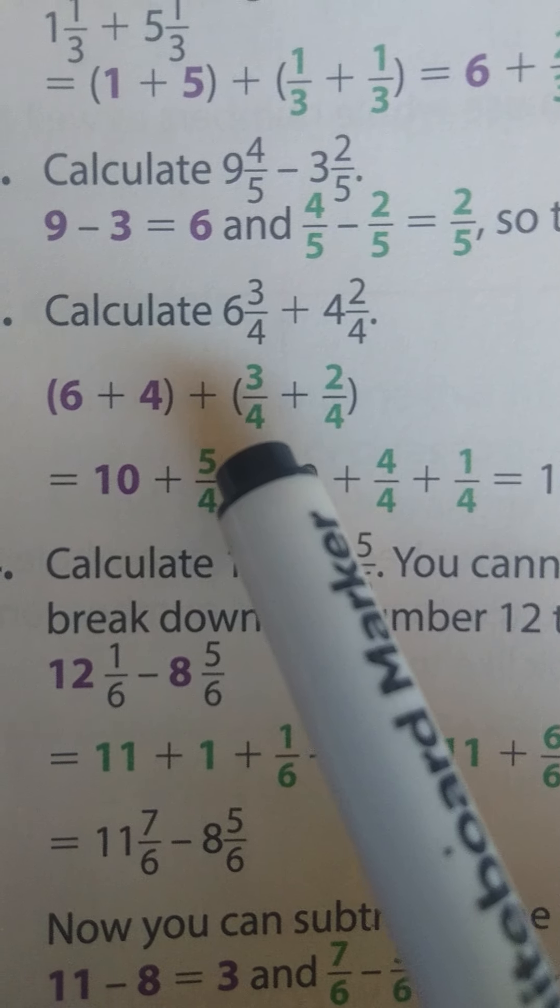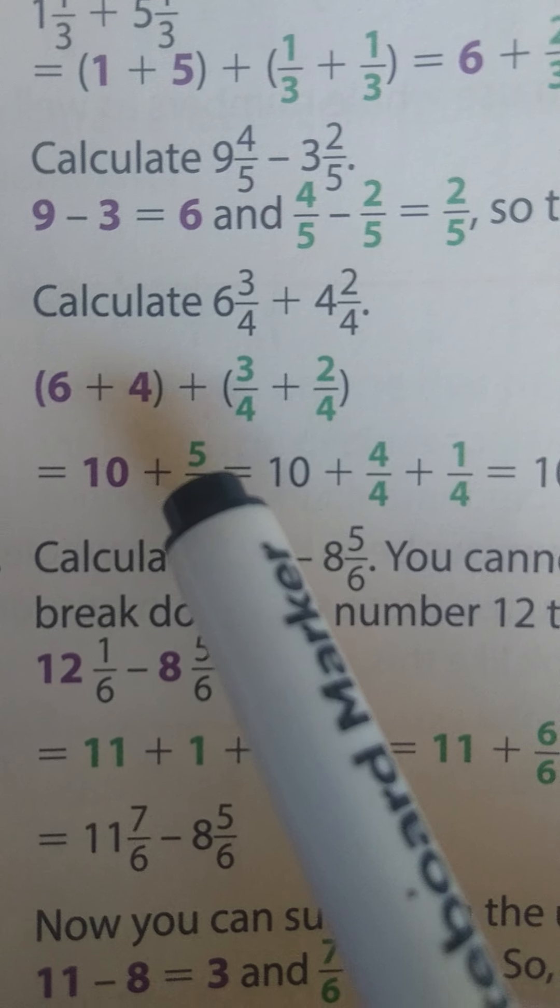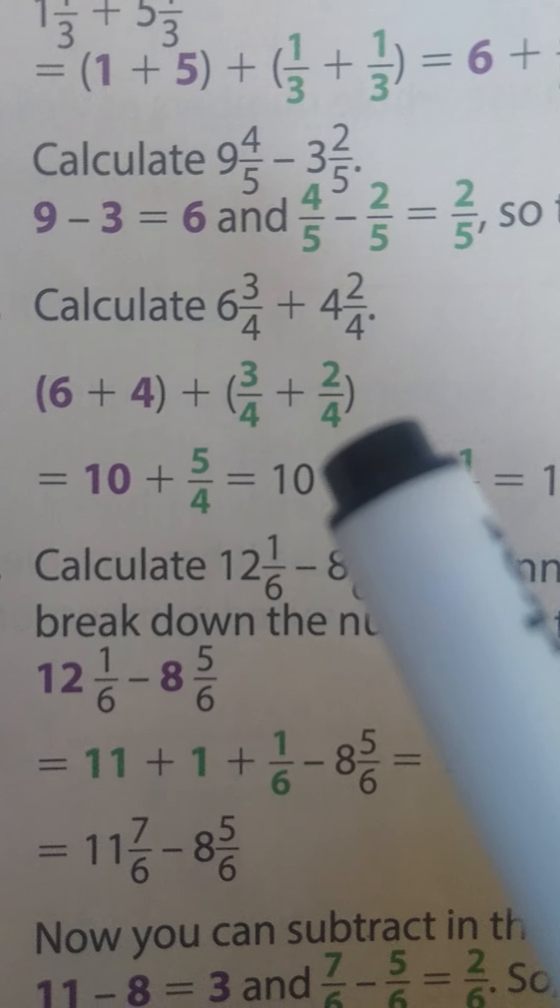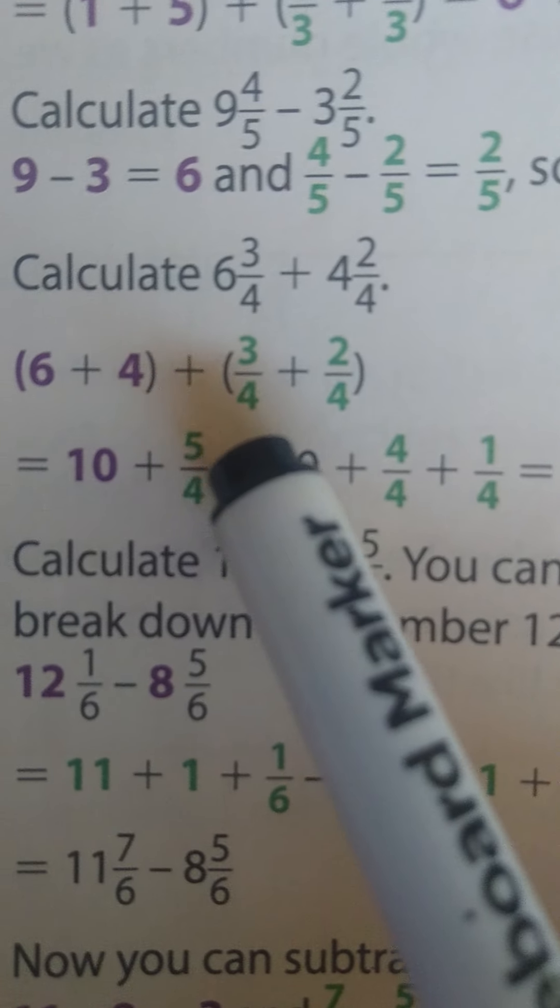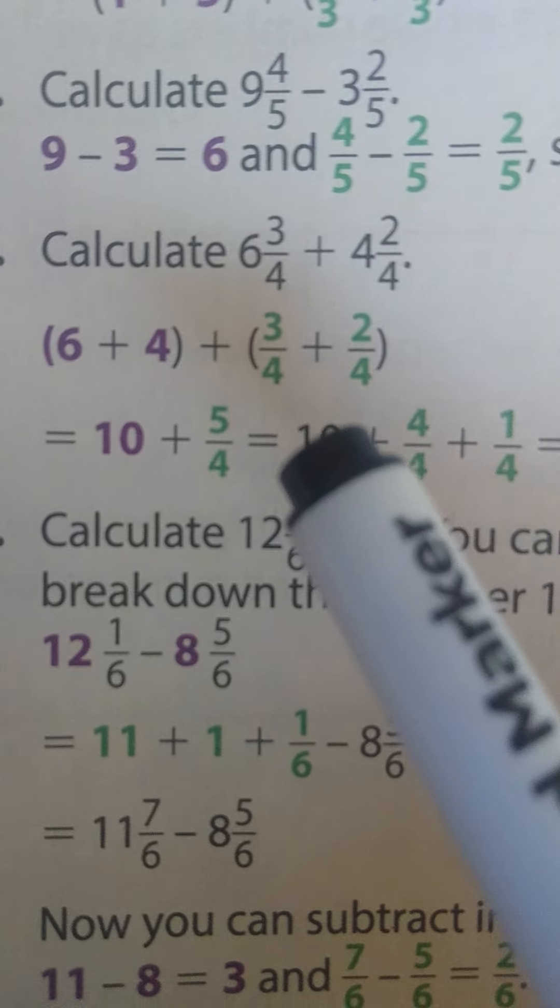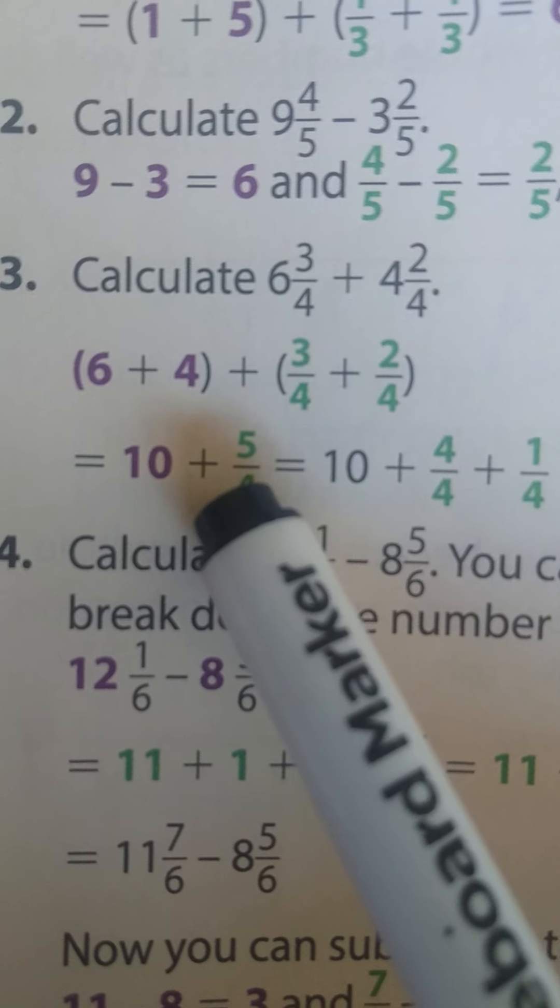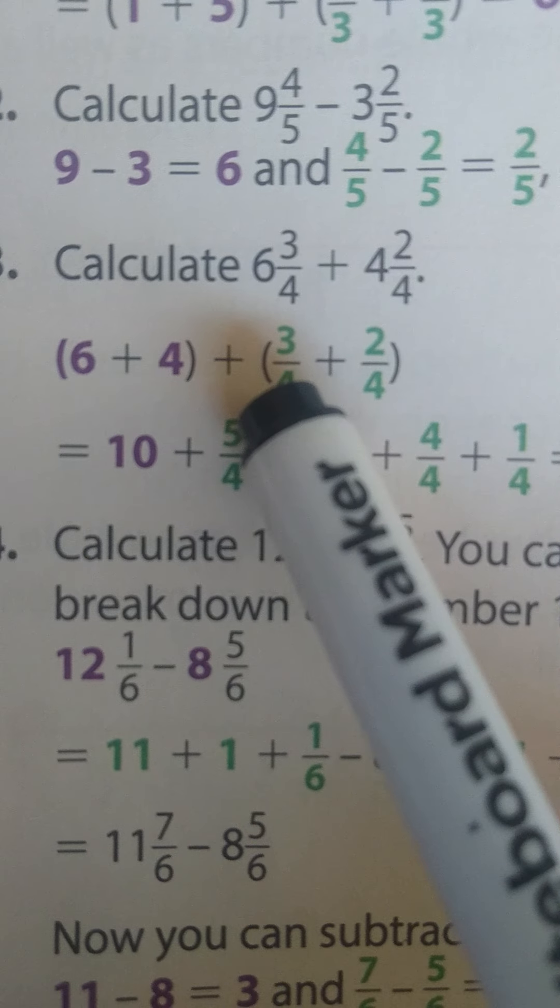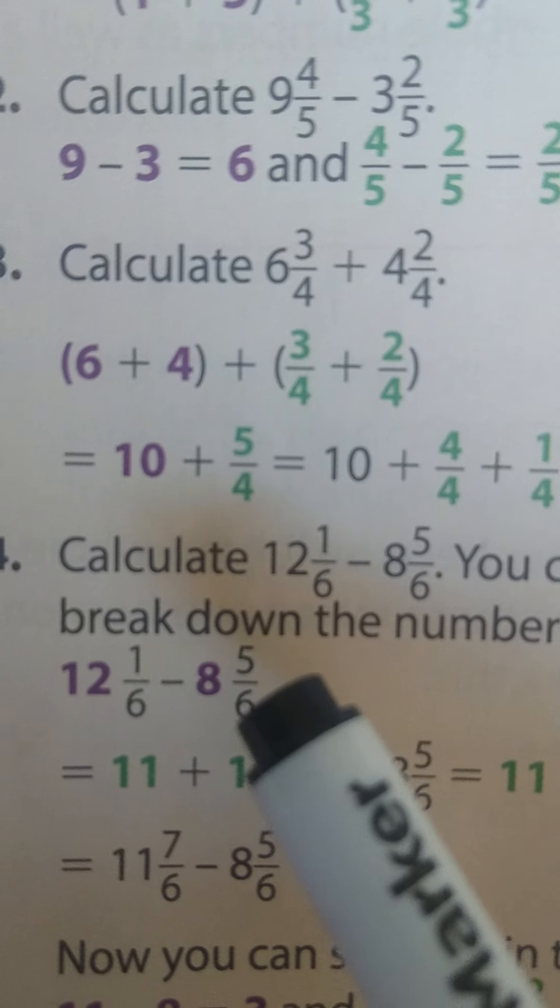Now take note that this is an improper fraction. So we need to convert it into a mixed fraction. So remember how I told you guys, you are going to say how many times can 4 go into 5? 4 can go into 5 once. So that's going to be our whole number. And we are left with our remainder is 1. So we are just going to put that ¼.